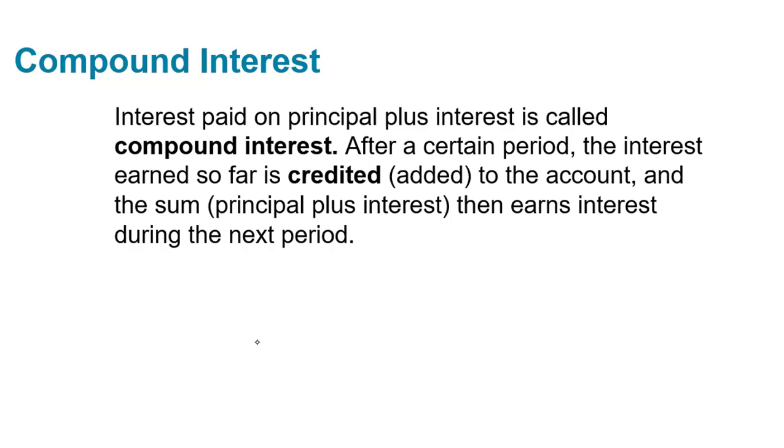Interest paid on principal plus interest is called compound interest. After a certain period, the interest earned so far is credited or added to the account, and the sum, the principal plus the interest, then earns interest during the next period. So interest earns interest when we are calculating compound interest, which is very different from simple interest.